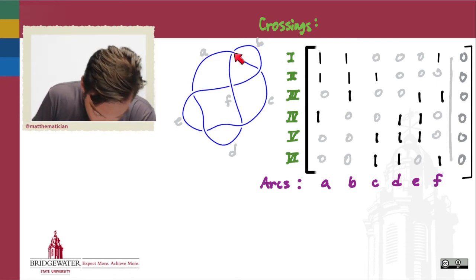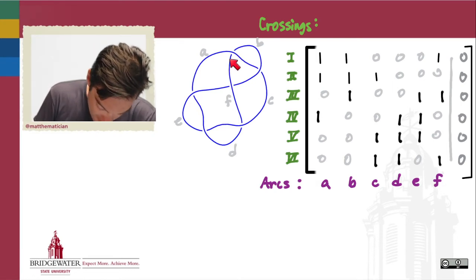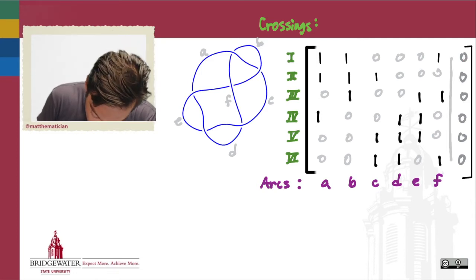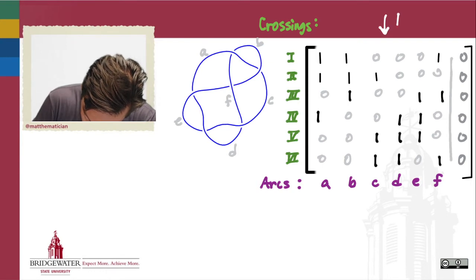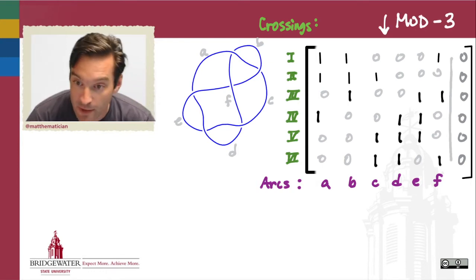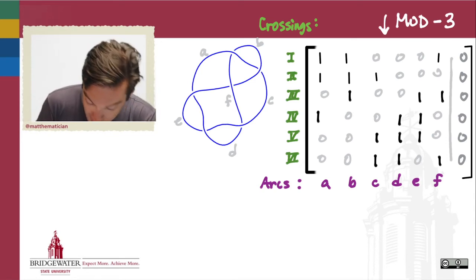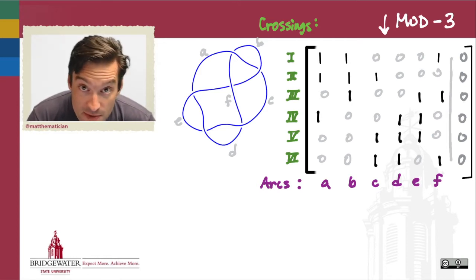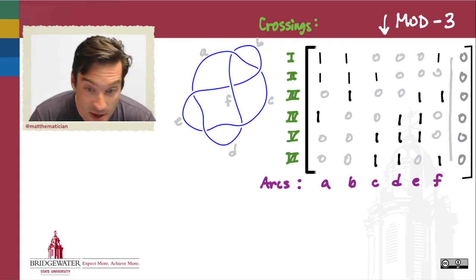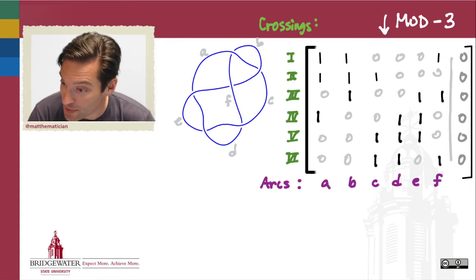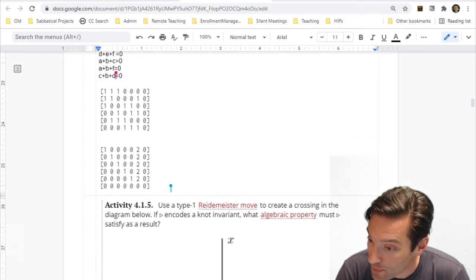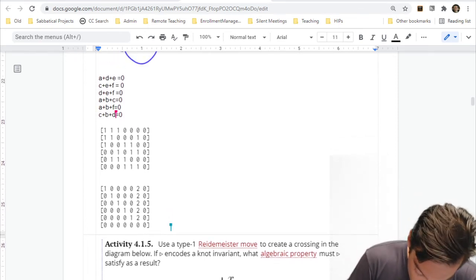For each one of the crossings, we set up an equation satisfied if and only if the colorability criteria are met. For example, at the crossing where arcs A, B, and F all come together, A plus B plus F must equal zero — interpreting this linear algebra as modulo three. Running through the same process for each of the six crossings, we get a big six-by-six matrix equation. We can row reduce this matrix equation using mod three arithmetic, a task much better suited for a computer, particularly for a six-by-six matrix.